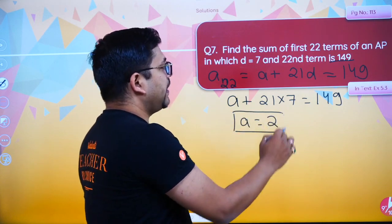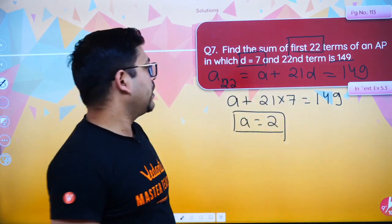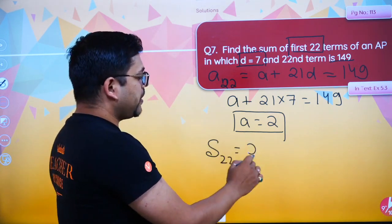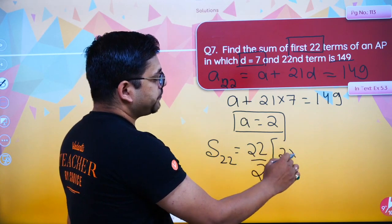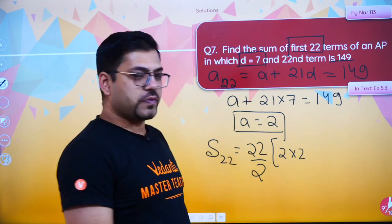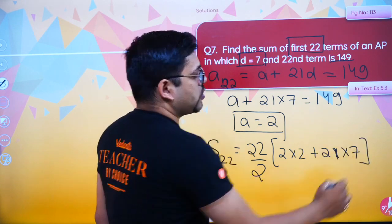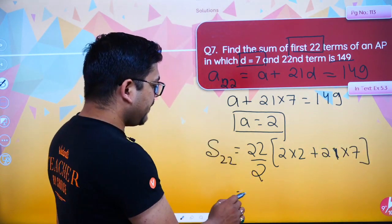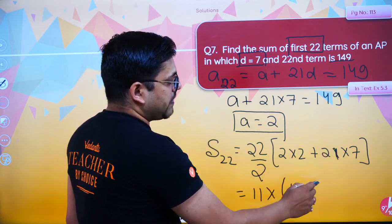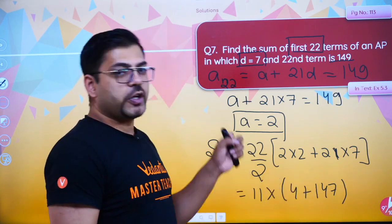So A value is 2 and D value is 7. Now we have to find the sum of first 22 terms, S22. Write the S22 formula: N/2 × (2A + (N−1)D). That is 22/2 into 2A plus 21 into D. So 22/2 is 11, 2×2 is 4, and 21×7 is 147. Then 147 plus 4 is 151.